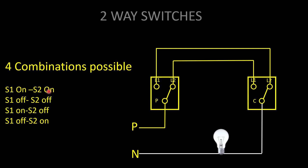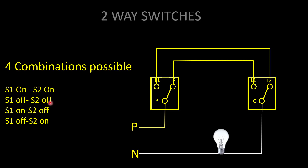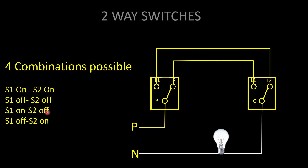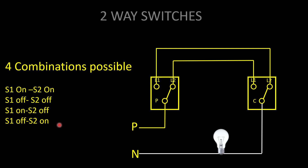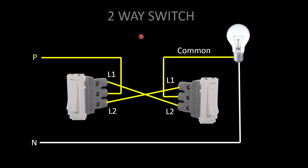Using two-way switches for controlling a light, four combinations are possible: switch one on and switch two on; switch one off and switch two off; switch one on and switch two off; switch one off and switch two on. Let's look at each combination one by one. In the first combination, both switch one and switch two are off — what happens to the lamp?